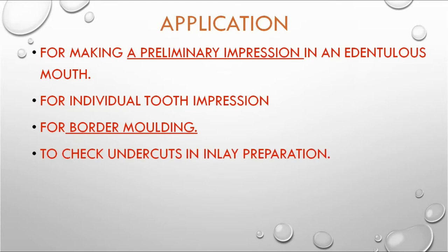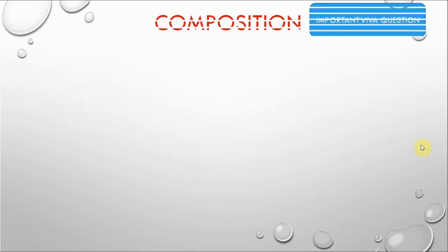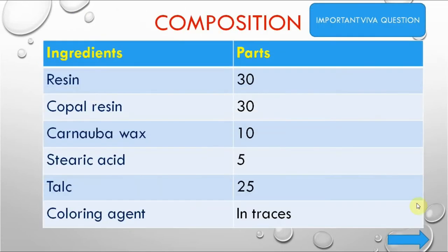Applications of impression compound: making preliminary impression, first impression in edentulous mouth, border molding for limiting the area to record using green stick compound, checking undercuts in inlay preparation, and making special trays. Composition (important viva question): resin 30 parts, copal resin 30 parts, carnauba wax 10 parts, stearic acid 5 parts, talc 25 parts, and coloring agent in traces.